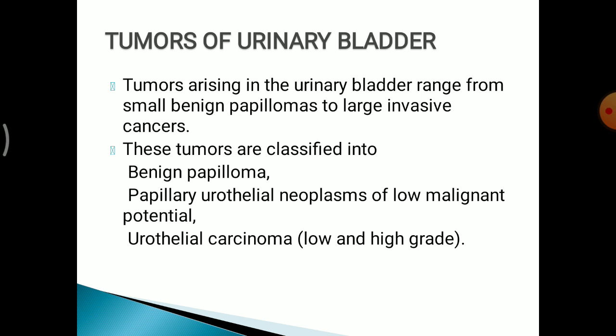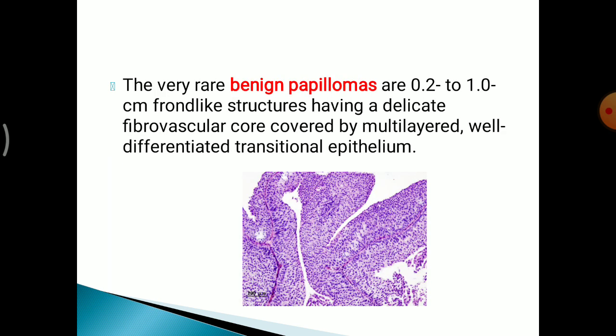That ends the tumours of the renal system. Moving to tumours of the urinary bladder: tumours arising in the urinary bladder range from small benign papillomas to large invasive cancers. They are classified into benign papillomas, papillary urothelial neoplasms of low malignant potential and urothelial carcinoma. Benign papillomas are 0.2 to 1 cm frond-like structures with a delicate fibrovascular core lined by multilayered, well-differentiated transitional epithelium.